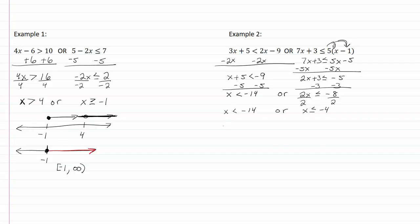Okay, so let's look at that on the graph. I have negative fourteen here and I have a negative four here.